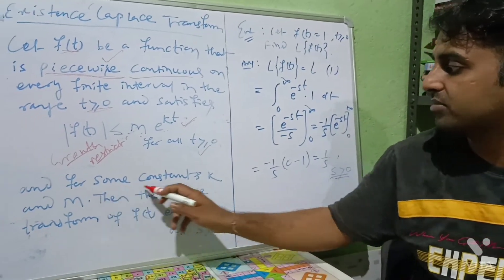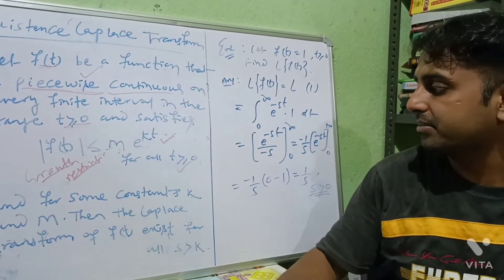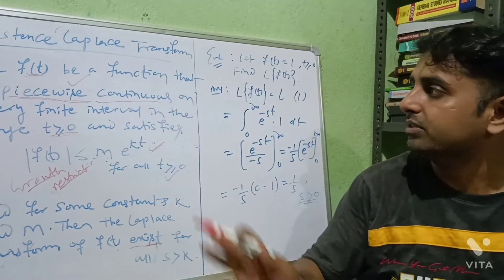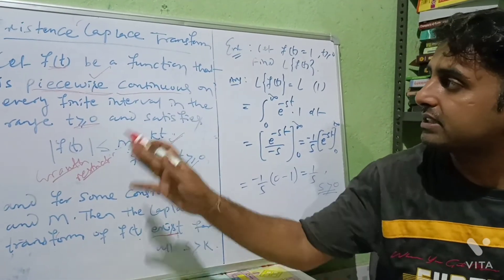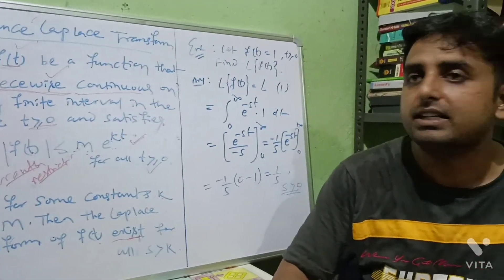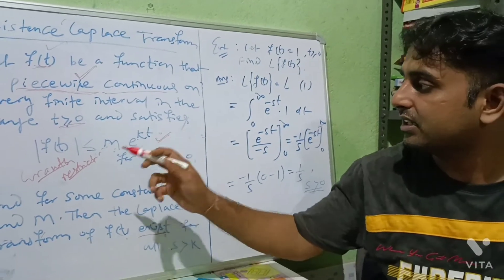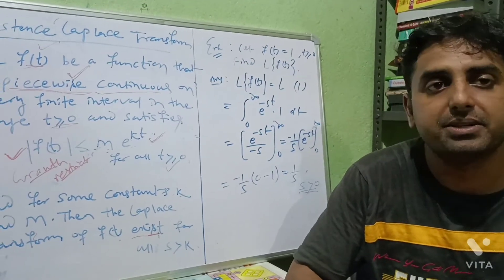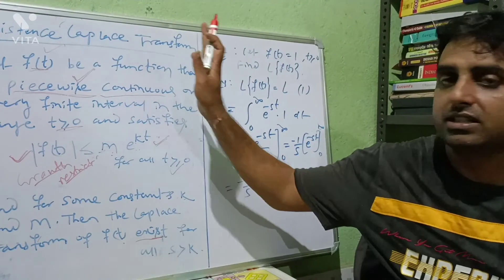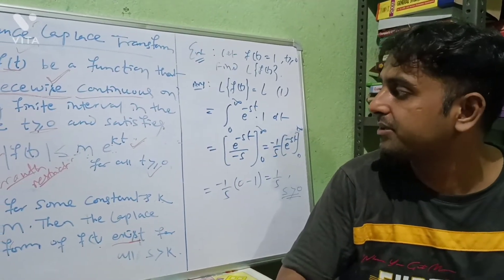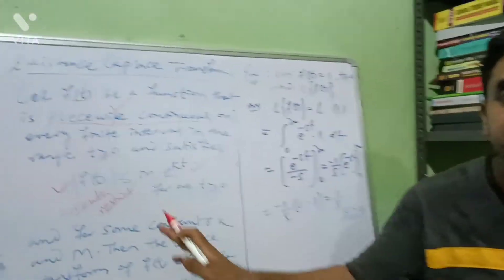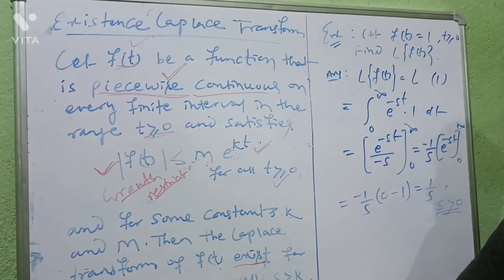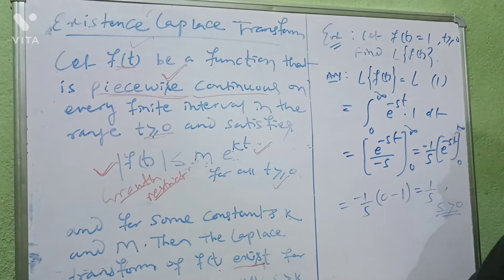So we have two conditions: first, the function f(t) must be piecewise continuous; and secondly, it must satisfy the inequality |f(t)| ≤ M·e^(kt) — meaning it must not grow faster than exponentially. For some constants k and M, the Laplace transform of f(t) exists. So f(t) must be defined, piecewise continuous, and satisfy this inequality. Under these conditions, the Laplace transform of f(t) exists — not every function's Laplace transform exists.